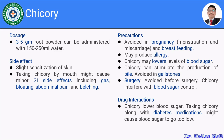Let us move towards the precautions. These precautions are very important — precautions and drug interactions — because we may assume that herbal drugs don't have side effects or drug interactions. There are certain precautions and warnings when using herbal drugs. For Chicory, the first precaution is that it should be avoided in pregnancy and breastfeeding. In the case of pregnancy, there might be chances of menstruation and miscarriage.